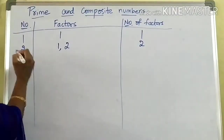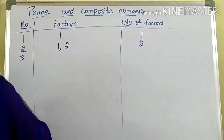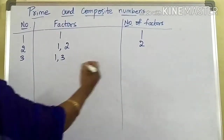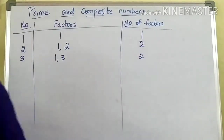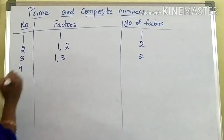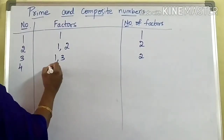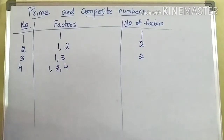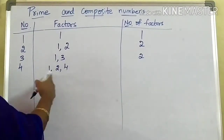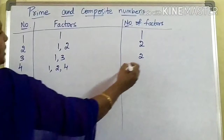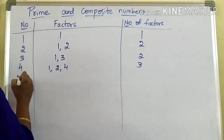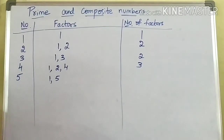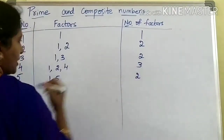Coming to three, what are the factors of three? One and three. So number of factors are two. Next, coming to four. Four will go in what tables? It will go in one table, two table, and four table. So total how many factors for four? Three. Next, coming to five — one and five. Only two factors for five.